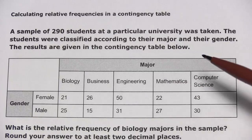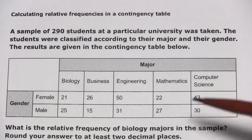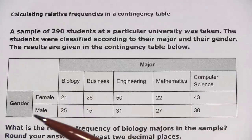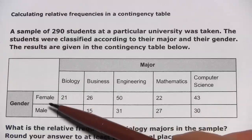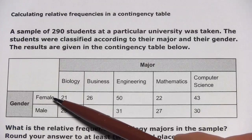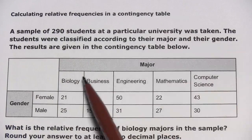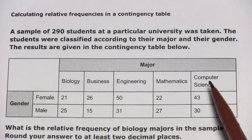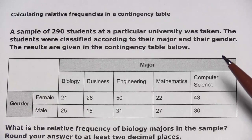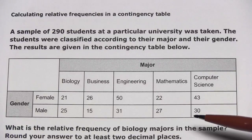In these problems, we're looking at relative frequencies from contingency tables. Contingency tables are charts like this where they usually break a group down into some subgroups. Here, it's broken people down into their genders — female and male — and then breaks them down along another category, in this case into their majors in college. So you can see how many males and females are in each major at some school.